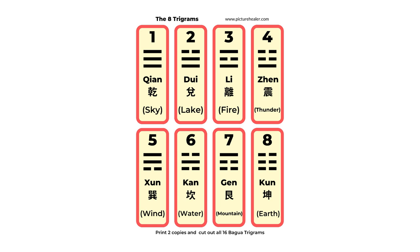And the number eight Kun Gua is related to earth. So those are the basics of the Ba Gua, the eight trigrams. This is also the basis of the Yi Jing, or the Book of Change.